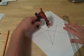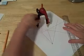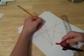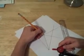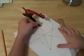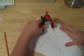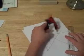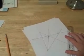Take our compass and cut an arc. From those two intersection points, we need to cut another arc and create an X.